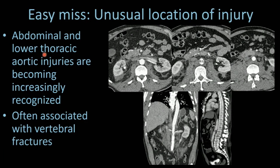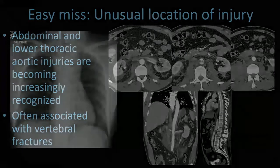Abdominal and lower thoracic injuries are becoming increasingly recognized. Another patient with an abdominal aortic injury has a thrombus and blood around the aorta. They're often associated with vertebral body fracture. So if you see a vertebral fracture, particularly a compression type injury, take a very close look at your abdominal aorta.